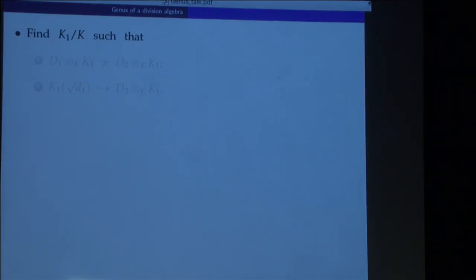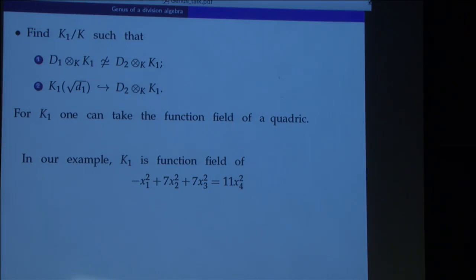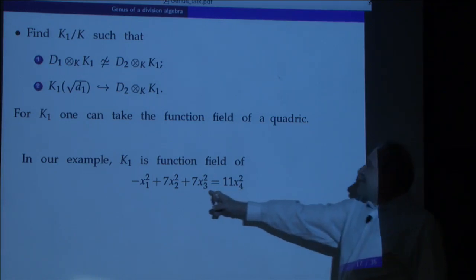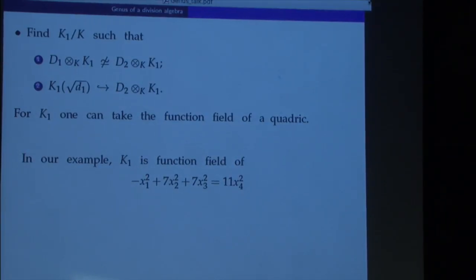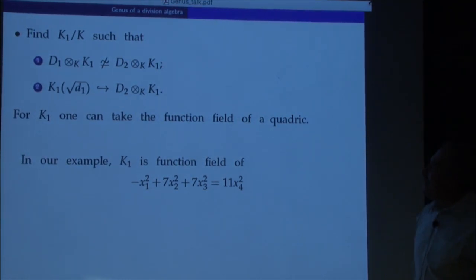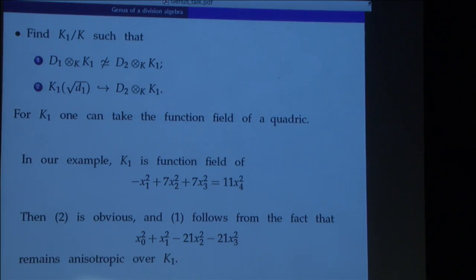What we do next is construct an extension K1 of K so that the algebras remain non-isomorphic, but after this base change, K1(√11) already embeds into D2. This can be done by taking K1 to be the function field of a certain quadric — concretely the imaginary part of the reduced norm of the second algebra set to represent 11. The second condition is then clear, and the first condition requires some work using certain results about pfister forms to show the algebras remain non-isomorphic.